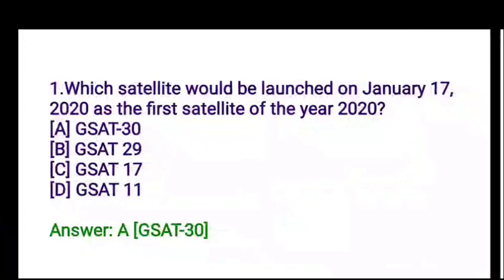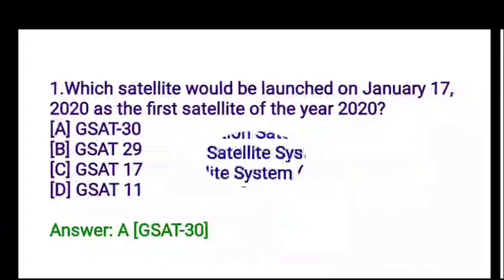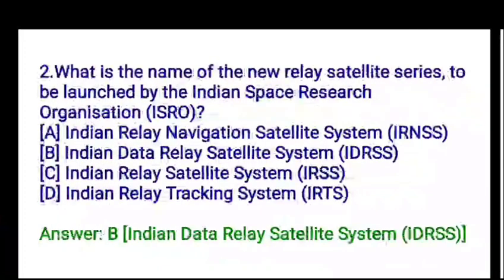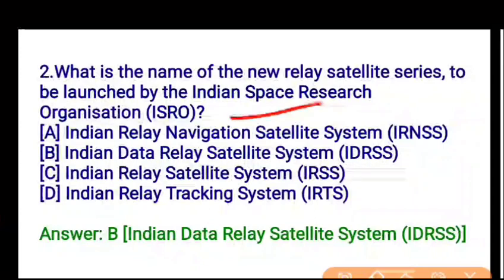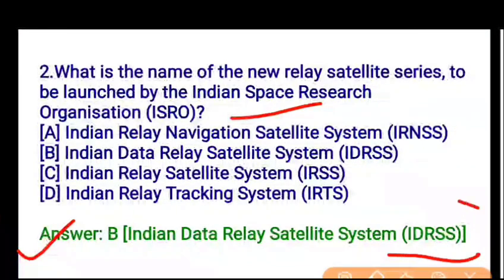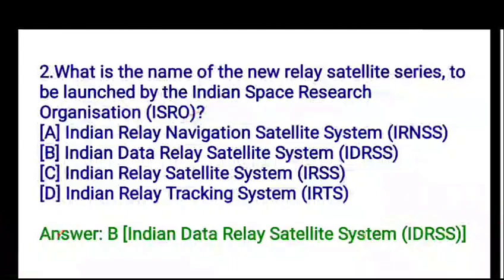You need to know the names of the satellite series launched by the Indian Space Research Organisation, ISRO. For the Junior Science Talent examination, you need to know about ISRO missions especially. ISRO has launched the Indian Regional Navigation Satellite System (IRNSS) and the Indian Data Relay Satellite System (IDRSS). The correct answer is option B — IDRSS, the Indian Data Relay Satellite System.